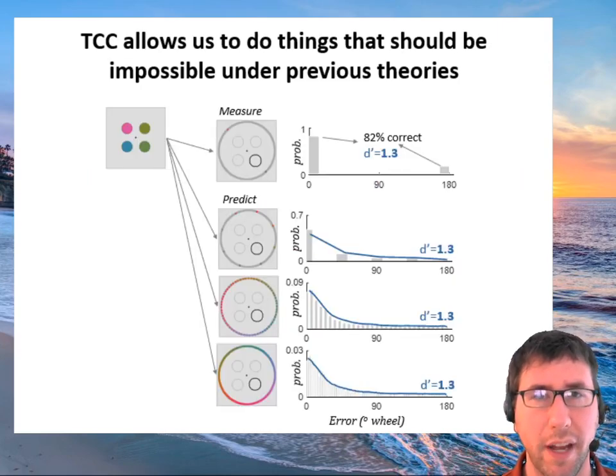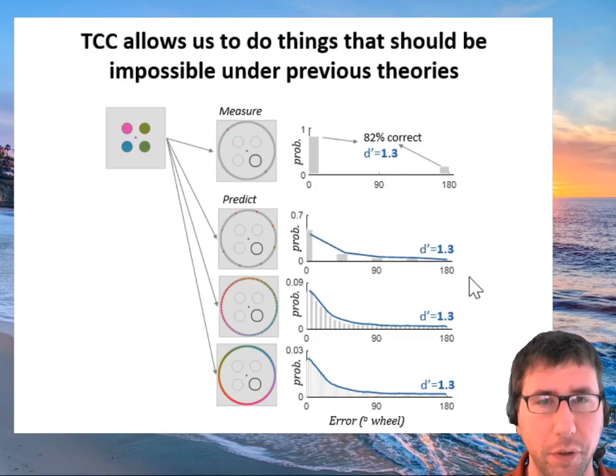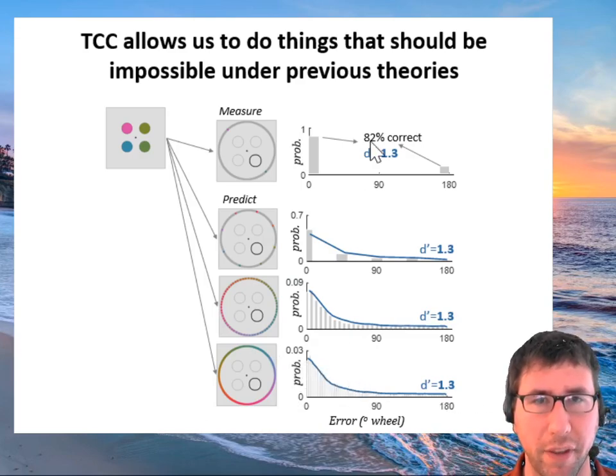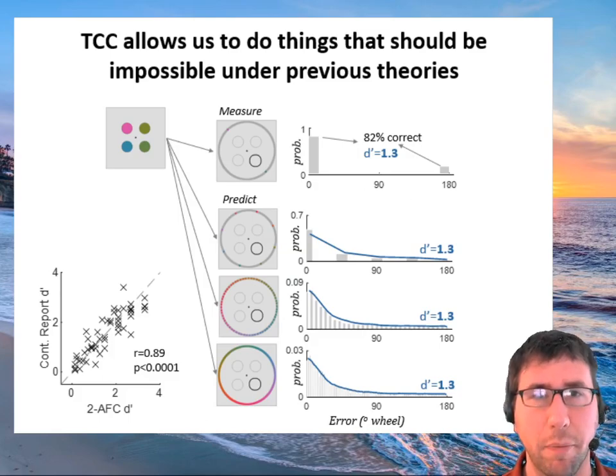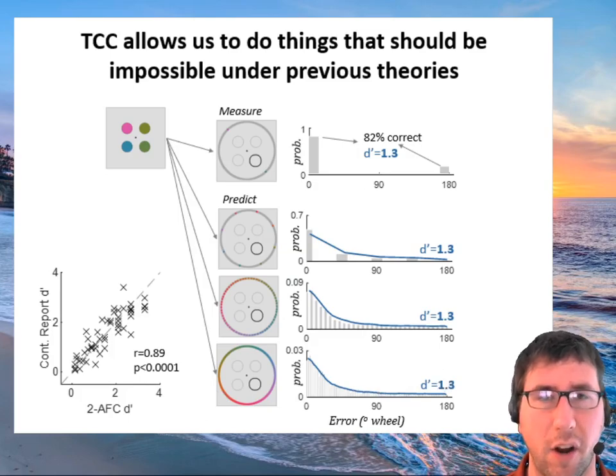And so we've tested this and it works perfectly. That is, if we just do a 2-AFC task where they are asked to do 180 degree difference, then measuring d-prime in that task is totally sufficient to predict how well people will do in these other tasks, including continuous reports. So the blue line here is a zero free parameter prediction from this data alone and the similarity function, and the gray is the real data. You can see that across any number of different foils, including continuous report, this works just perfectly, and it even works at the individual subject level. So the d-prime you measure in this task is exactly the same d-prime that we measure in continuous report using the TCC similarity function model.